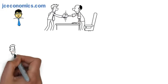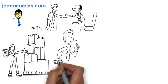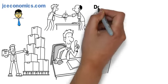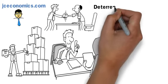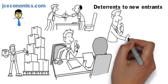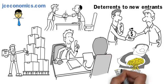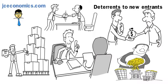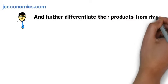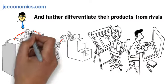Sometimes intensive advertising campaigns are used as deterrents to new entrants. Having supernormal profits in the long run enables oligopolies to invest huge sums in R&D and further differentiate their products from rivals through design and quality of materials used.